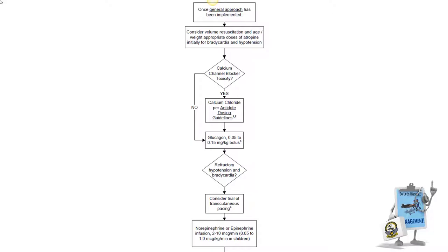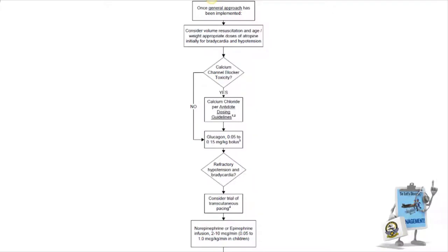While glucagon is primarily indicated for beta blocker overdose, often times individuals overdose on multiple agents, so administering glucagon in the case of a calcium channel blocker overdose cannot hurt. Just remember that the amount of glucagon needed to be effective is quite substantial.